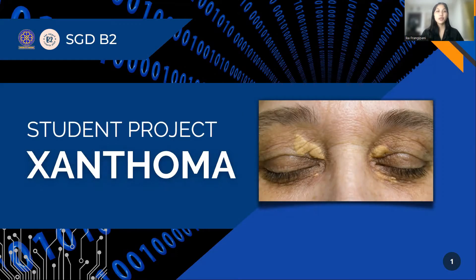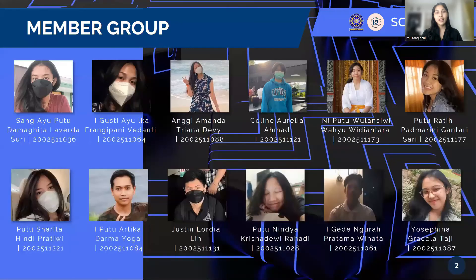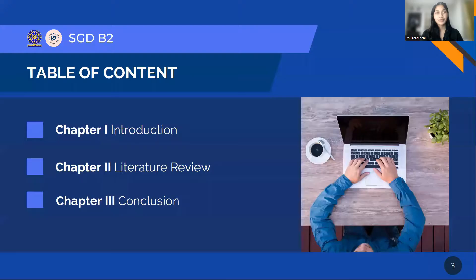Hello everyone, we are from student group discussion B2. I'm going to present about our student project on Xanthoma. Here are our group's members. This presentation will consist of three chapters: the first one is introduction, the second one is literature review, and the last one is conclusion.